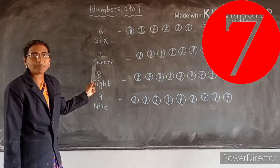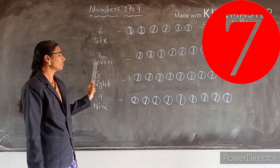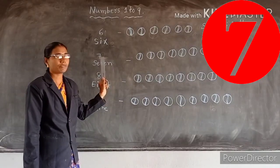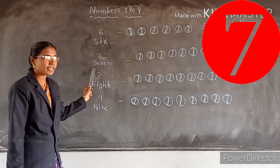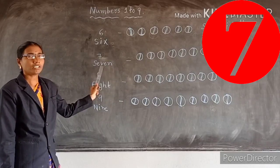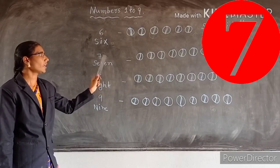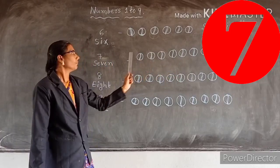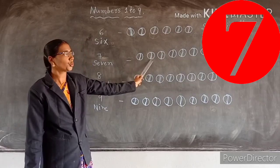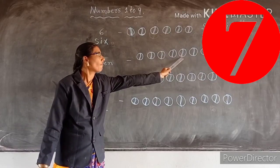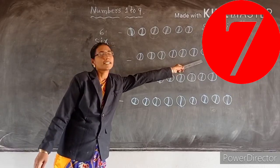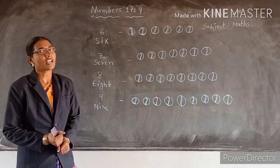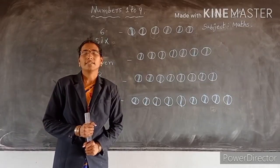What is this spelling? 7. How many parts are there? 7. How many parts are there, children? 7.